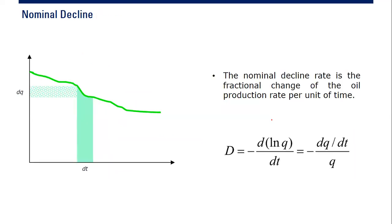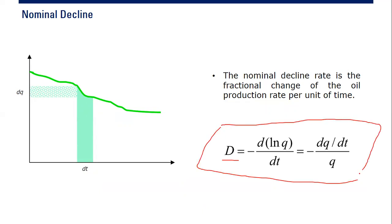So we start with nominal decline. What is nominal decline rate? Nominal decline rate is the fractional change of the oil production rate per unit time. Mathematically, you can calculate the nominal decline rate — symbol capital D — using this formula: it's minus the differential of the natural logarithm of flow rate with respect to time, or equivalently, the negative rate of change of flow rate with respect to time, per flow rate.